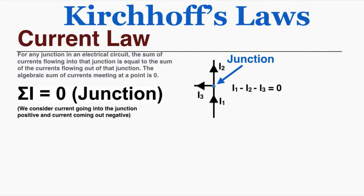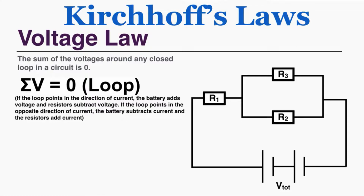The voltage law says that the sum of the voltages around any closed loop in a circuit is zero. If the loop points in the direction of current, the battery adds voltage and resistors subtract voltage. If the loop points in the opposite direction of current, the battery subtracts voltage and the resistors add voltage.